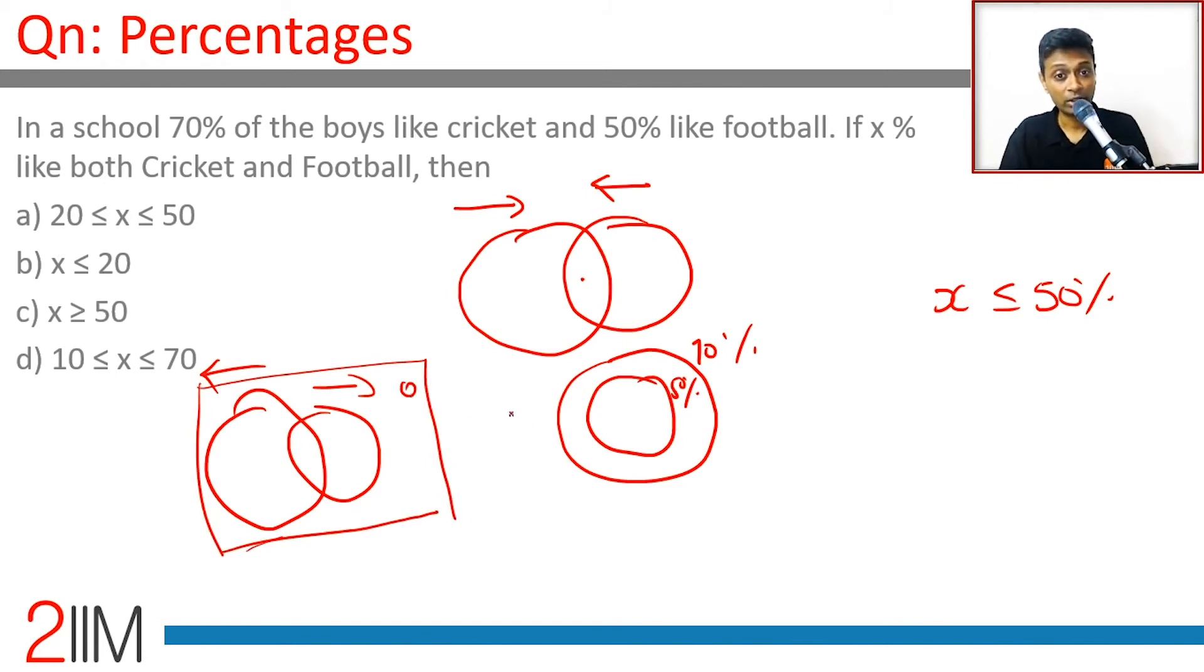All the boys should like either cricket or football, so this is zero. This is 70, this is 50, this is x. It should be 70 minus x here, 50 minus x here. The total adds up to 70 minus x plus x plus 50 minus x—120 minus x. The outside should be zero, so the minimum value x can take is 20%.